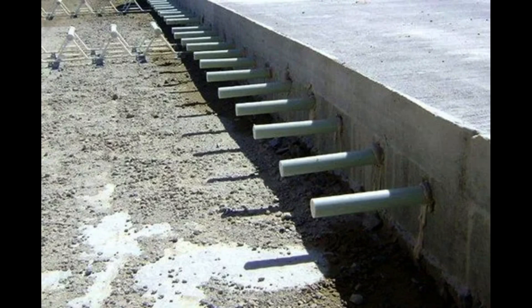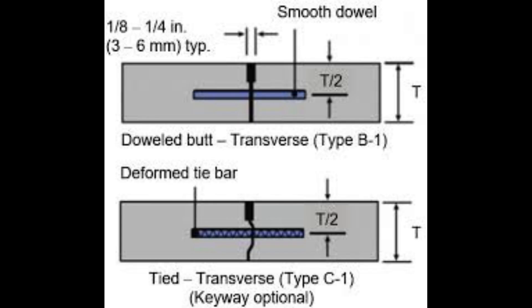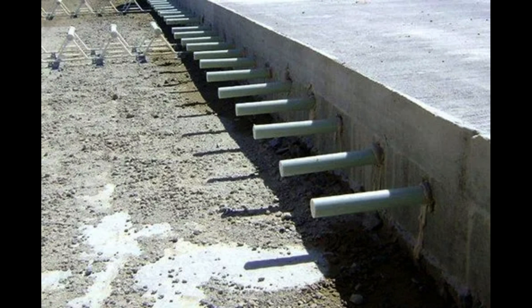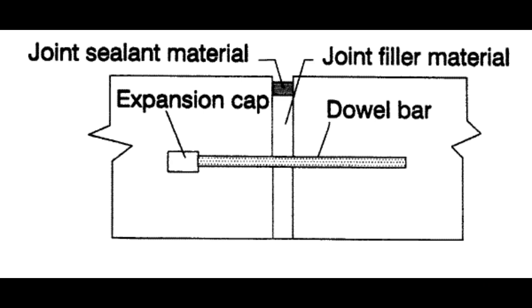What are the guidelines for dowel alignment in concrete pavements? Dowel bars are typically placed at the mid-depth of the slab and should be parallel to the pavement surface and parallel to the direction of travel. The center of the dowel bar should be below the joint.